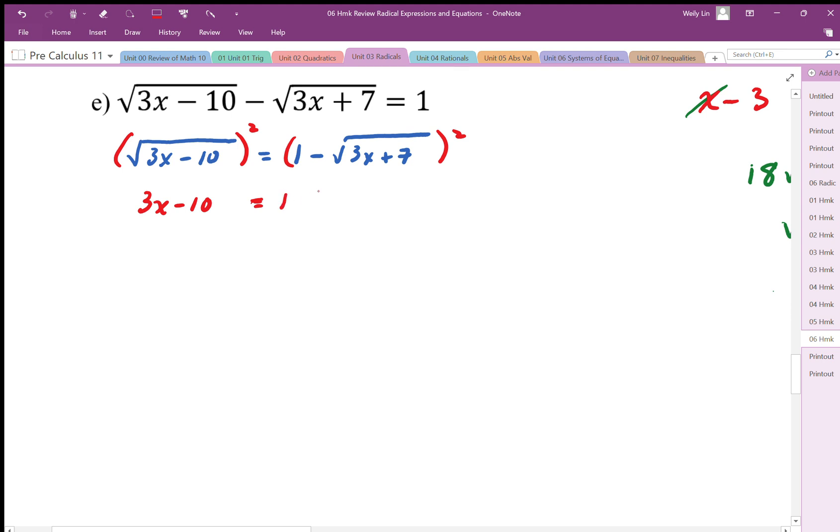So we end up with 1 minus 2 square root 3x plus 7 plus, and then we undo the square root, so we end up with 3x plus 7.